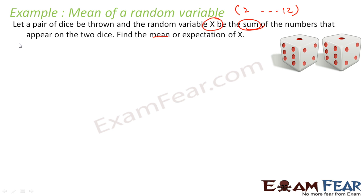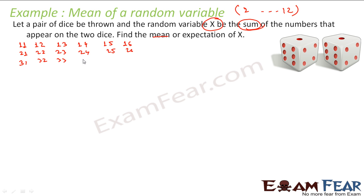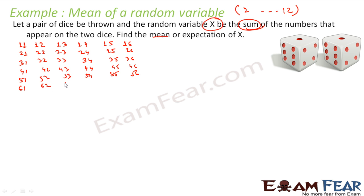Let's define the sample space. The first die can give 1 and the second 1, 2, 3, 4, 5, 6 — that's one set. Starting with 2: (2,1), (2,2), (2,3), (2,4), (2,5), (2,6). Then (3,1) through (3,6), (4,1) through (4,6), (5,1) through (5,6), and (6,1) through (6,6). So we have a total of 36 possible outcomes.